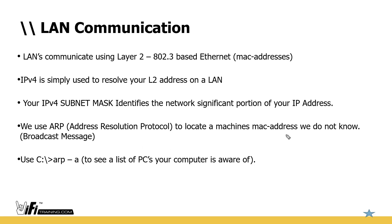We use ARP to locate MAC addresses we don't know, using broadcast messages to discover and resolve those addresses. We send an ARP broadcast saying 'I'm looking for this host, I need to send you a message' — everybody on the LAN segment gets a copy, the target host responds with its MAC address, and then we can forward that frame. To see the network devices your computer is aware of, open Command Prompt and type 'arp -a' to show the list of MAC addresses your computer knows.